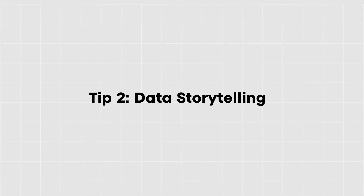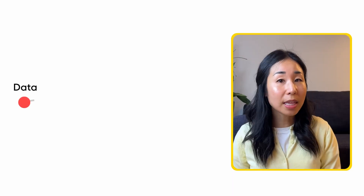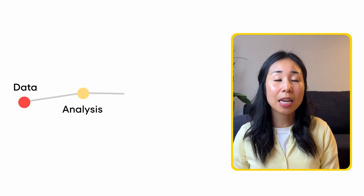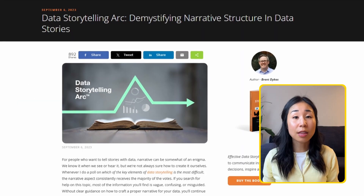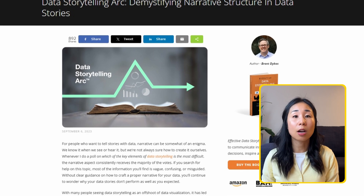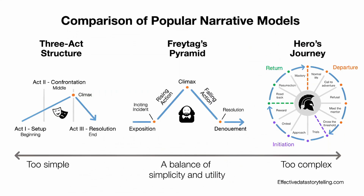Knowing your audience and needs really dictates how you communicate data, and that leads me to my next tip: data storytelling. Data storytelling involves transforming your data analysis into a narrative that communicates the data. It involves knowing the audience, understanding their needs, and being able to communicate a storyline that helps the audience really understand the data. A structure that really helps is the data storytelling arc by Brent Dykes. He explains that it's very much like telling a narrative in a fictional story, where you have a beginning, a climax, and an end.